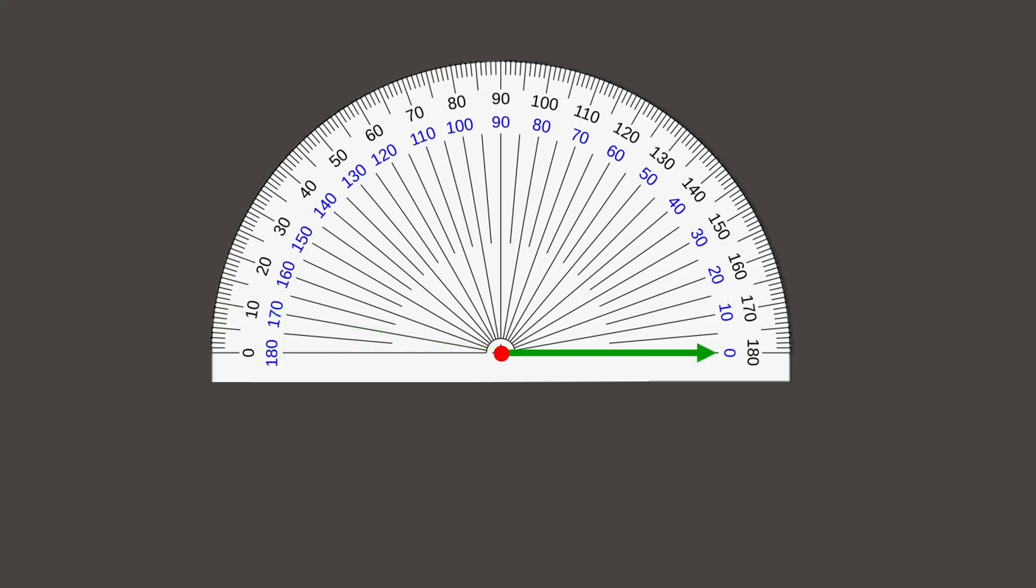Here's another example using the inner scale. If one arm is pointing at 0 and the other at 50, the angle formed is 50 degrees. Now, here's an example of a 90 degree angle, and another of a 130 degree angle.